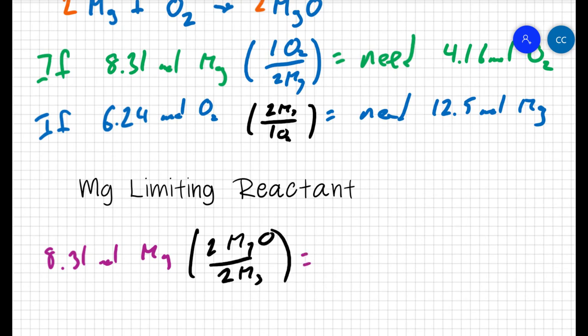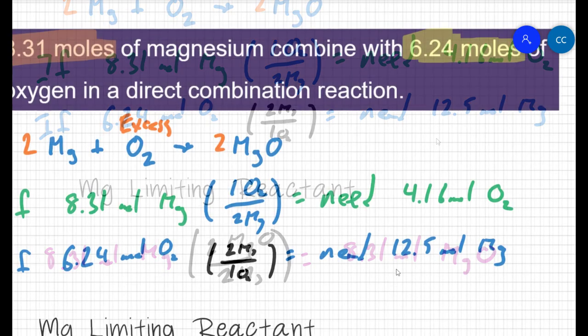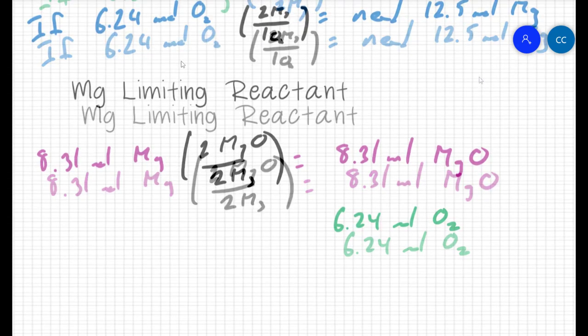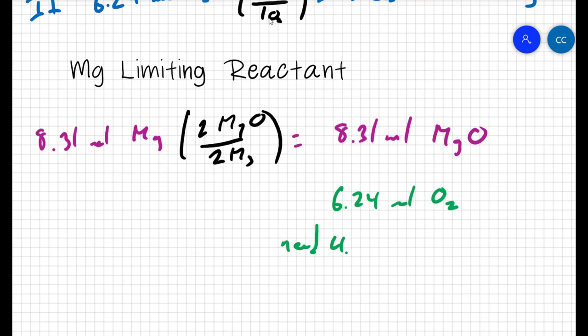So that means I'm going to make 8.31 moles of magnesium oxide. I can also figure out how much oxygen is going to be left over. I was given 6.24 moles of oxygen to begin, but we've discovered already that we only need 4.16 moles of oxygen. So that means when all is said and done, I'm going to end with 2.08 moles of excess oxygen.